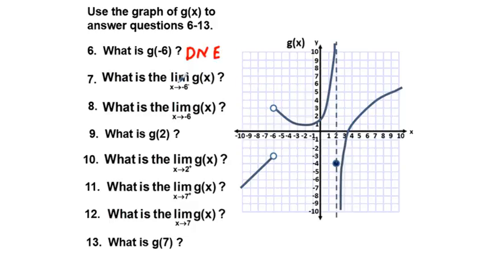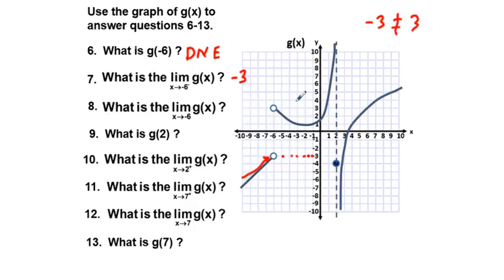What is the limit as x approaches negative 6 from the left of g of x? Coming from the left side on the graph, we're approaching negative three. Now, the limit as x approaches negative 6 of g of x requires both sides to agree. From the left we have negative three, but from the right we have positive three. They are not equal, so the limit does not exist.